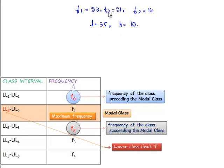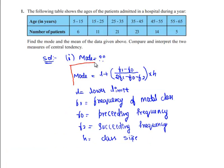Substituting all these values into the formula: mode is equal to L plus F1 minus F0 by 2F1 minus F0 minus F2 whole bracket into H.